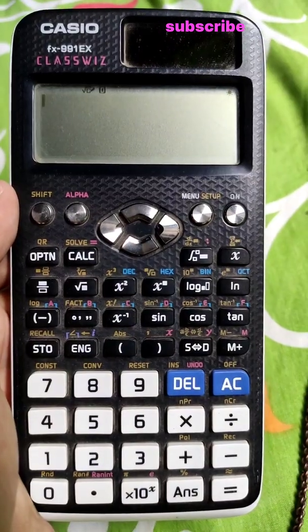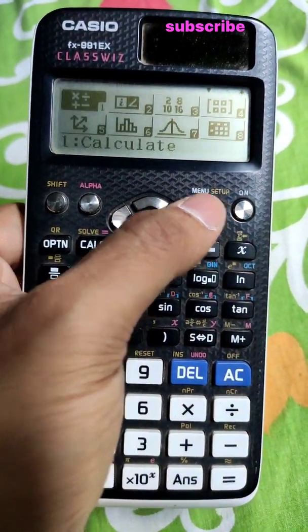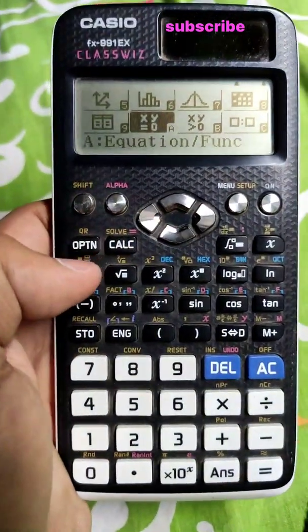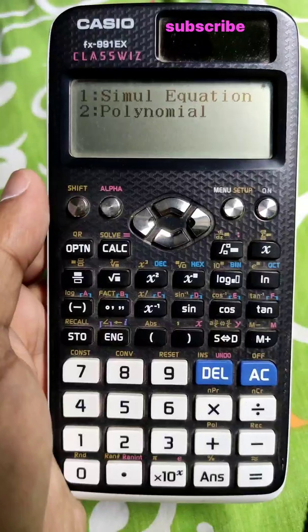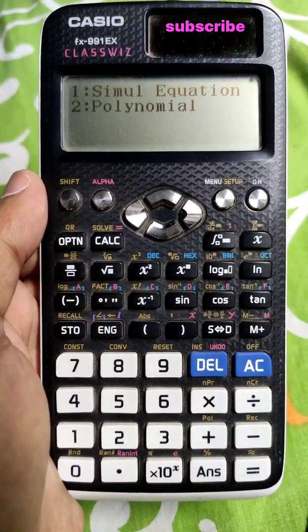Alright, let's start this tutorial. First, we go to the menu by pressing this menu button. We scroll down to this equation option and press A. Now it is asking us whether we want to solve the simultaneous equation or polynomial equation.